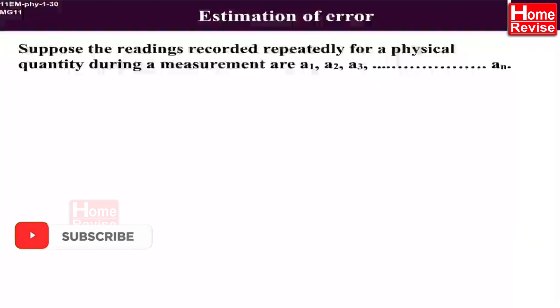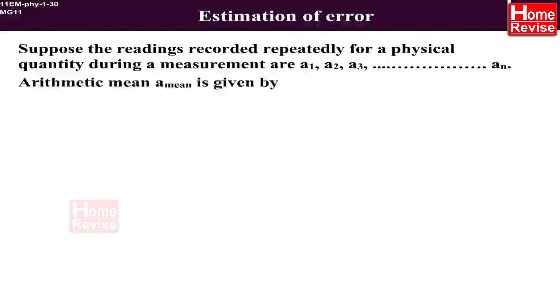Estimation of error. Suppose the readings recorded repeatedly for a physical quantity during a measurement are A1, A2, A3, and so on till An. Arithmetic mean A_mean is given by A_mean is equal to A1